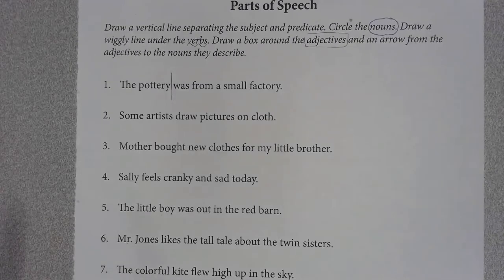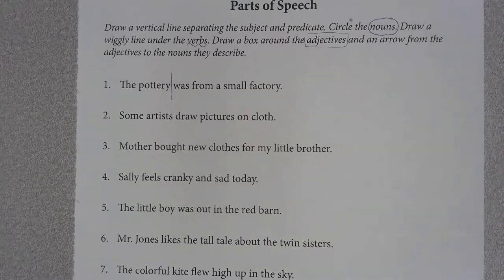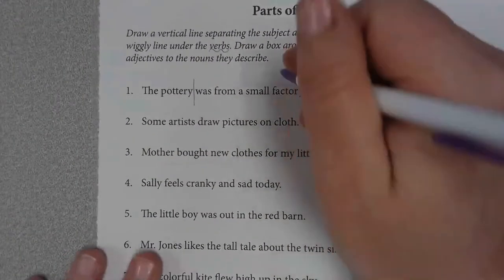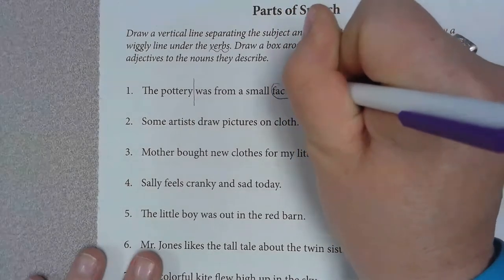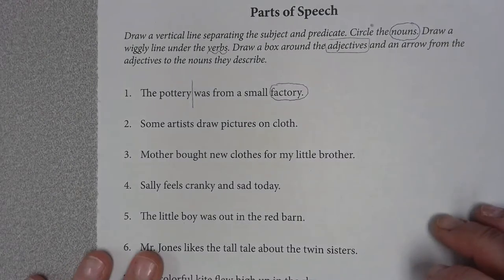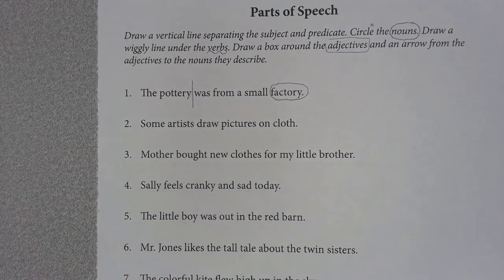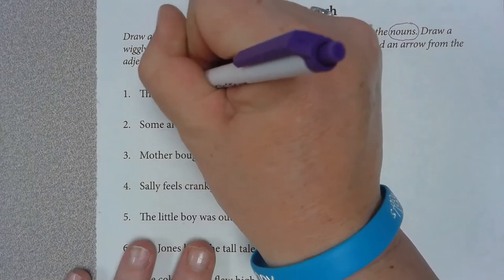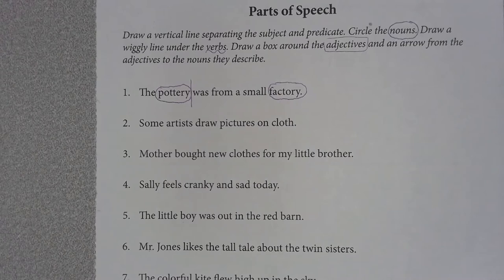Now, number one: the pottery was from a small factory. Who wants to raise their hand and tell me what the nouns are? A noun is a person, place, or thing. Factory is a noun — very good. I have one more. Small is not a noun. Pottery — very good. So we have separated the subject from the predicate and we have found the nouns.